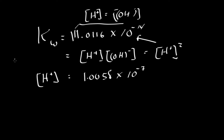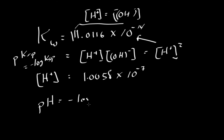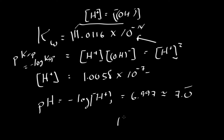Remember, before we had something called pKSP where we took the minus log of KSP — we can play the same trick here. We define pH as equal to minus the log of the hydrogen ion concentration. If we take the negative log of 1.0058 times 10 to the minus 7, we get 6.997, which we can round off to about 7.0.